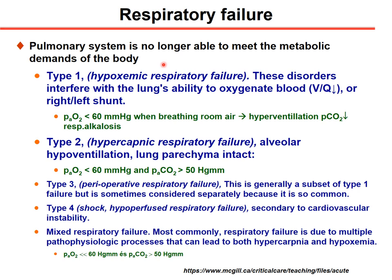There are several types used to categorize lung failure: type 1, type 2, type 3, and type 4. This classification is based on ABG analysis, where oxygen tension and carbon dioxide tension can be measured directly from arterial blood. Using this kind of differentiation, we can distinguish the different subtypes.